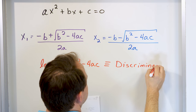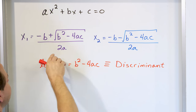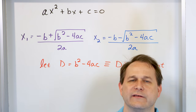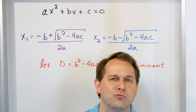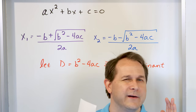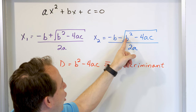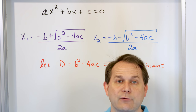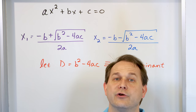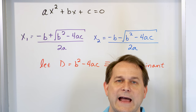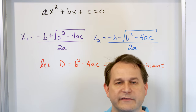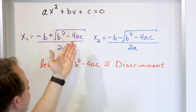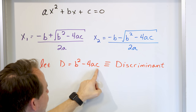The discriminant. When you really think about it, the reason we set it equal to what's under the radical is because what is under that radical really governs what the solutions of the quadratic formula will be. That radical is the most important part of the whole thing. If it's a positive number, you take the square root and get real answers. If it's negative, you take the square root and get imaginary numbers, so your answers will be imaginary. And if it's exactly zero, that's another special case.